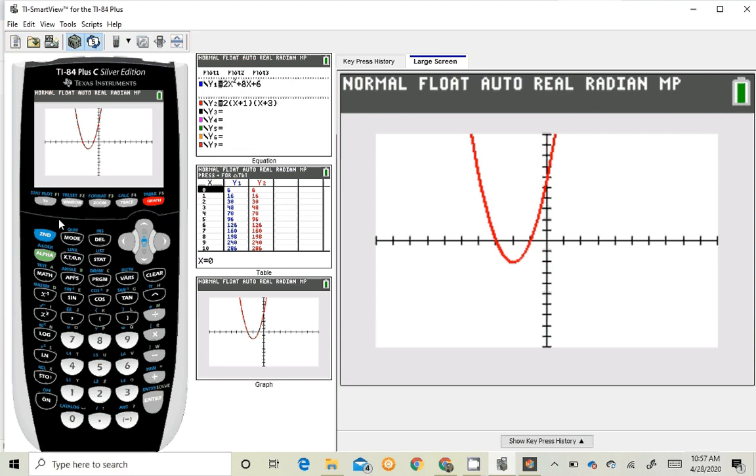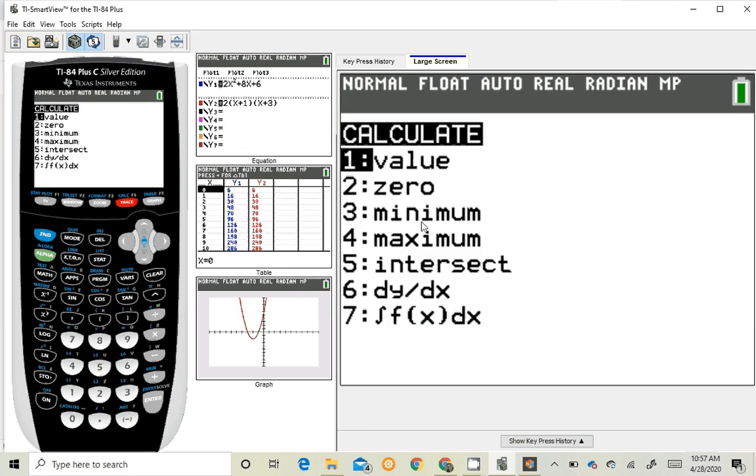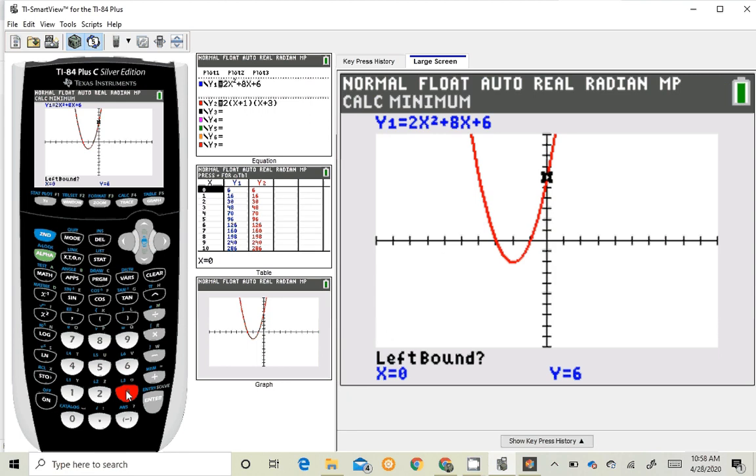Once again, I'm going to hit second, trace. Takes me into the calculate menu. And this time I want to find 3 minimum. Because it's opening up, it's going to be the minimum point on our parabola. Okay. Now it's going to ask the same questions, left bound. So I just need to move this guy to the left side of my vertex. That's good. And then right bound, I just need to move him back over to the right side of the vertex. Enter.